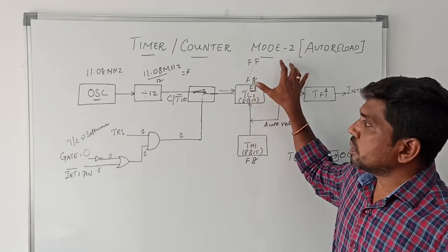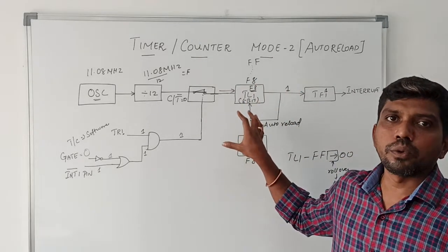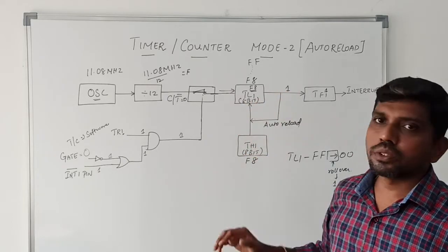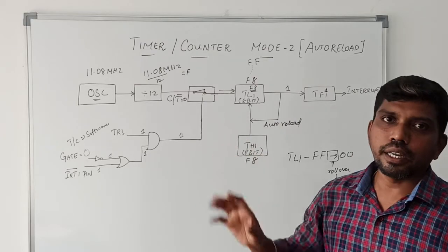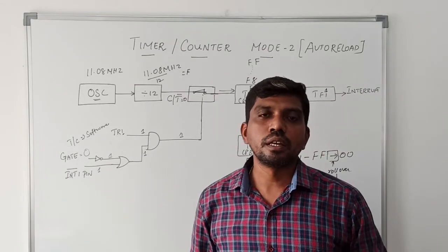Mode 0 uses a 13-bit timer counter register. Mode 1 uses a 16-bit value. In this Mode 2, we are using an 8-bit timer register.